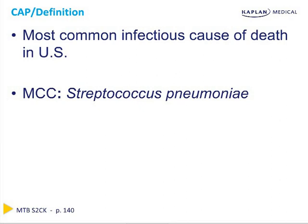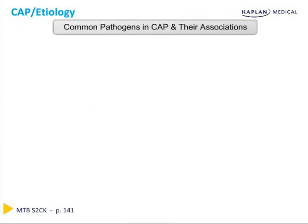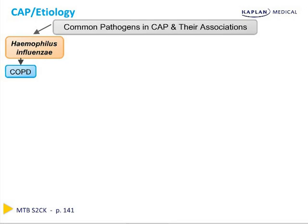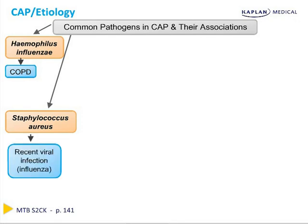The most common culprit is Streptococcus pneumoniae. There are several pathogens which most commonly cause community-acquired pneumonia, and they have certain epidemiologic and demographic associations that you should be aware of for Step 2. The first is H. flu, and this is most commonly associated with COPD. Staphylococcus aureus can cause community-acquired pneumonia, usually in patients after a viral infection, such as influenza.